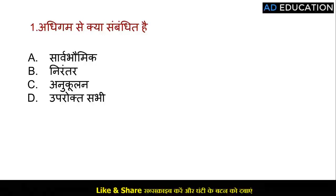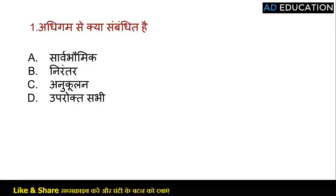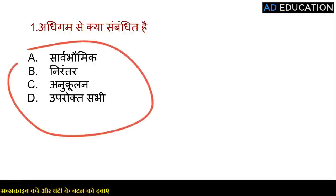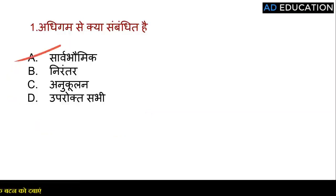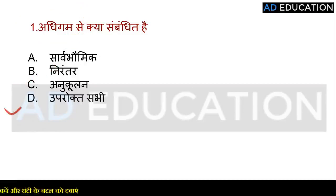Pehla prashna hai: adhigam se kya sambandit hai? Options hain: sarvbhaumic, nirantar, anukulan, aur uprokt sabhi. Yahan jo teen words diye gaye hain - sarvbhaumic hona, nirantar hona, aur anukulan - yeh teeno hi adhigam se bilkul connected hain. Toh iska sahi answer hoga D.